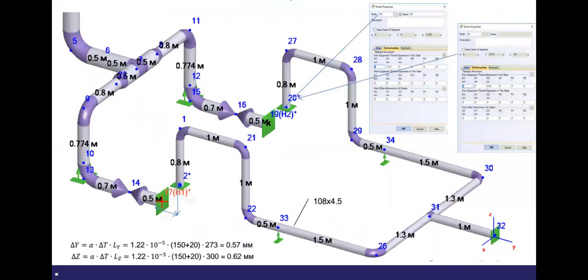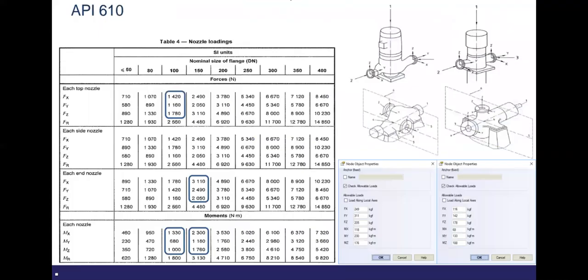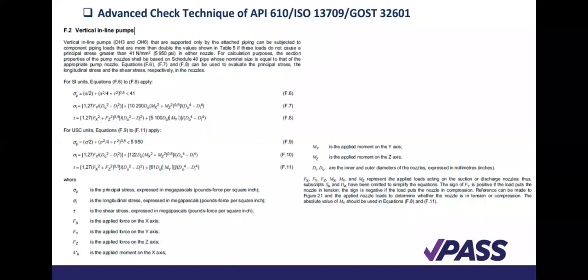What we've explained just now — here we are looking at the advanced check technique using the API 610, or the ISO 13709, or Goodman. Watch here — you see the vertical in-line form and the formulas here. These formulas are all embedded in the software.